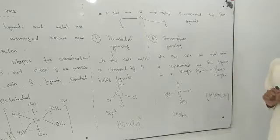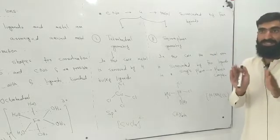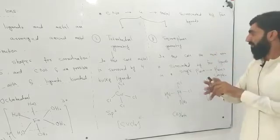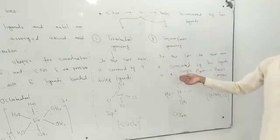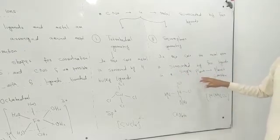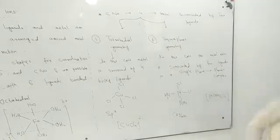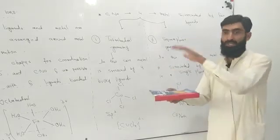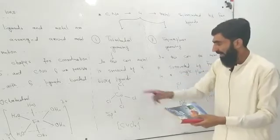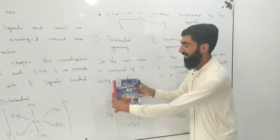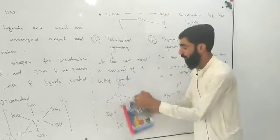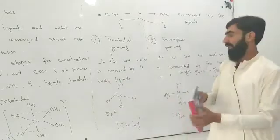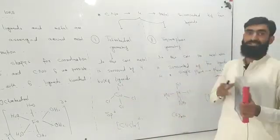The second case for coordination number 4 is square planar geometry. As the name suggests, square means four corners and planar means in one plane. In square planar geometry, the metal atom is surrounded by four ligands all in a single plane. For example, imagine a book — the metal is in the middle and four ligands are arranged around it in that one plane. This is a two-dimensional structure, unlike the three-dimensional tetrahedral and octahedral geometries.